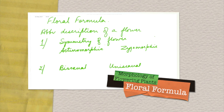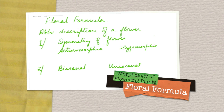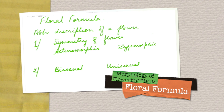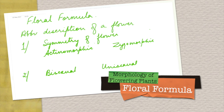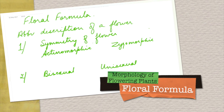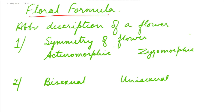Hello friends, welcome to Simplified Biology. Today we are going to take an important part of the chapter morphology of flowering plants — that is floral formula, which is very difficult to remember. Floral formula is actually an abbreviated description of a flower, and the first part of the floral formula that is written is the symmetry of the flower.